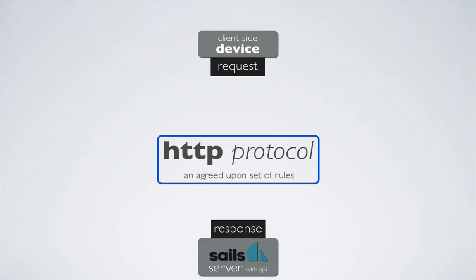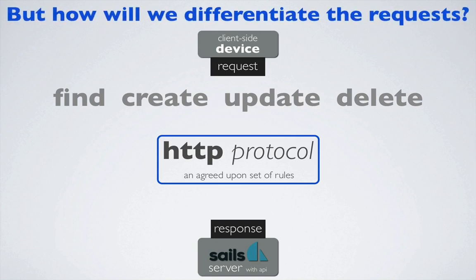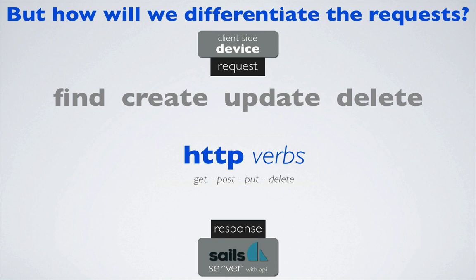Our API will support requests to find, create, update, or delete sleep information — but how will our API differentiate the requests? That is, how will it know that we want to find versus create, update versus delete a set of sleep information? The HTTP protocol provides the means to accomplish this via the use of HTTP verbs: GET, POST, PUT, and DELETE.